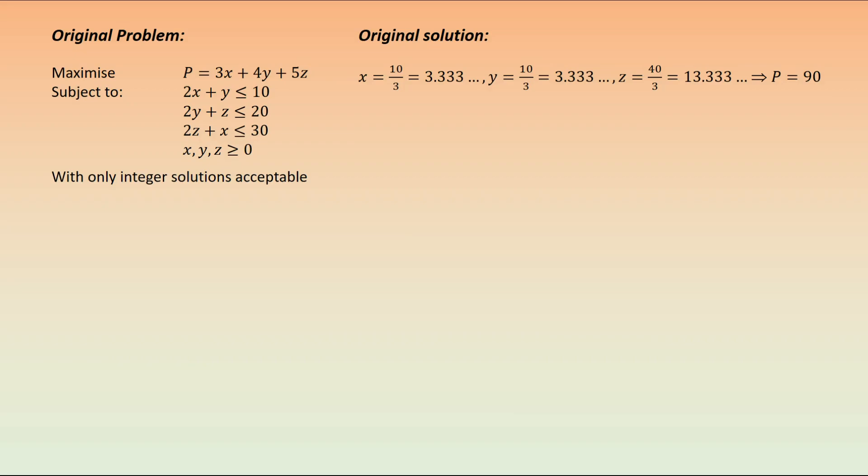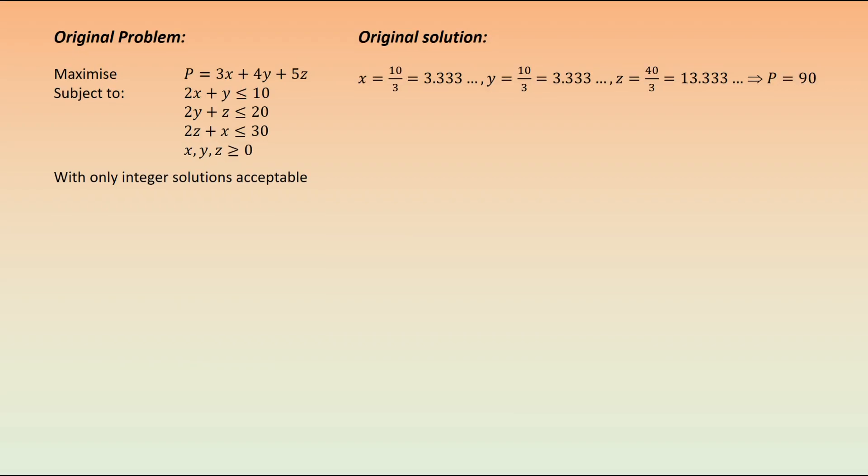Since we're now only allowed to have integer solutions, we need to think about what values we can have. Since x equals 3.3, we would sensibly check either side of that, so we check x equals 3 or 4. For y and z, we might also conclude the same.